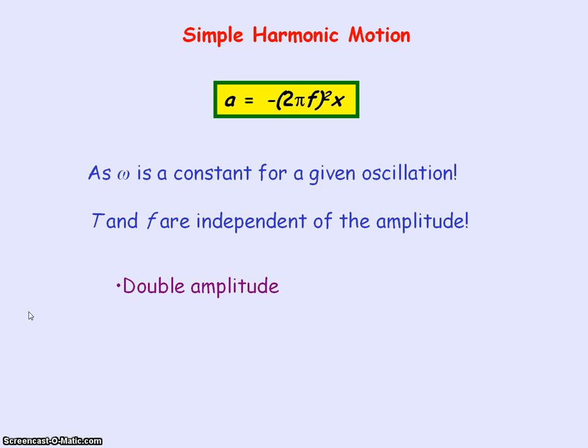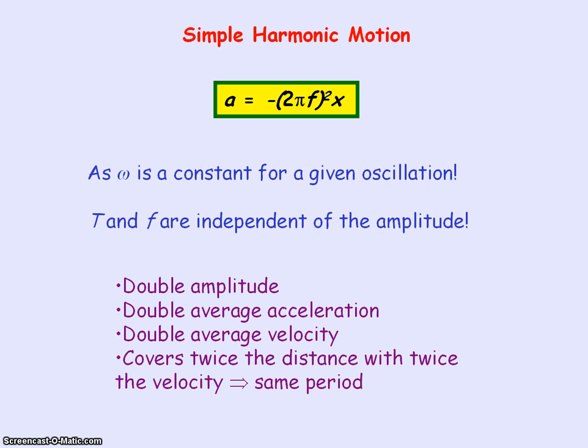If we were to double the amplitude, then the average acceleration would double. And as acceleration is equal to the rate of change of velocity, then the average velocity would double. So the oscillation would cover twice the distance with twice the velocity, and so that means it will cover one complete oscillation in the same period.